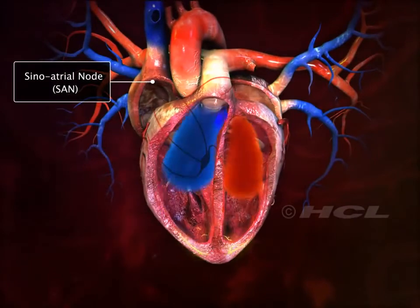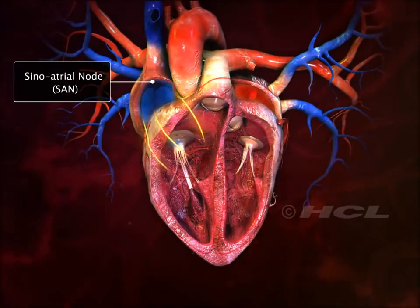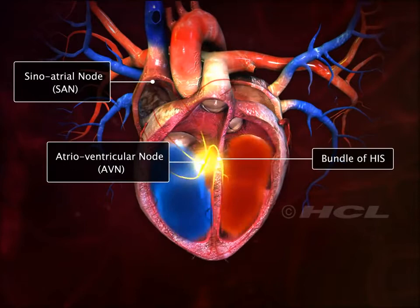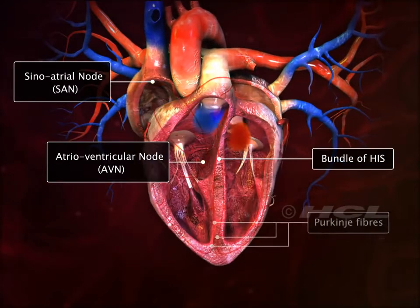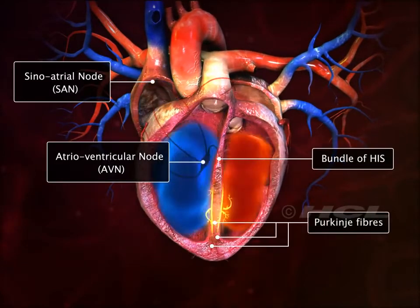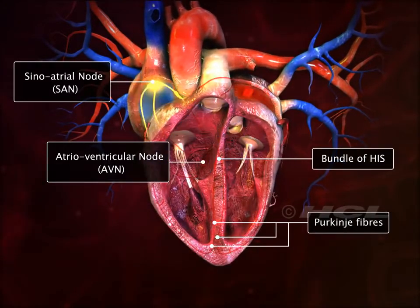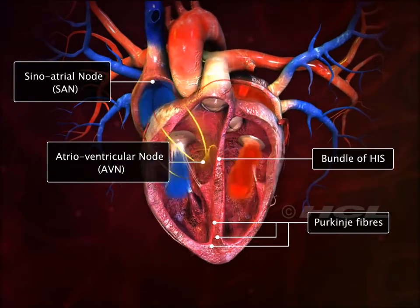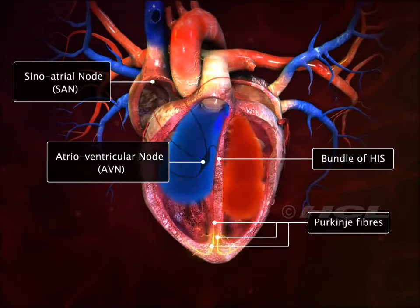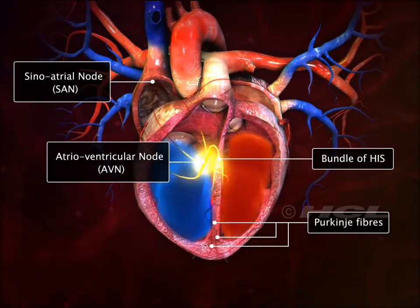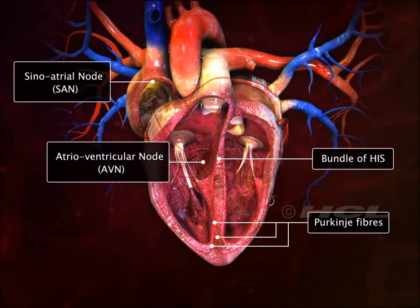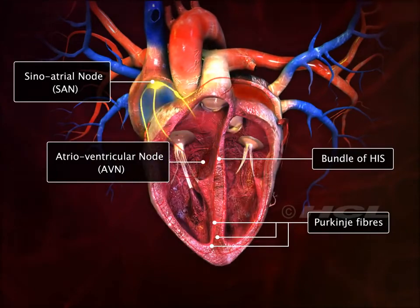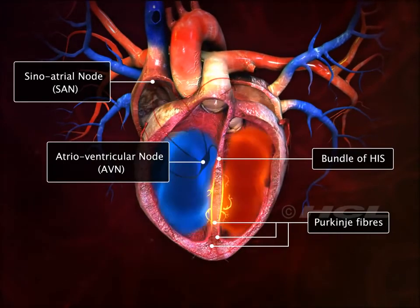The sinoatrial node, atrioventricular node, bundle of His, and Purkinje fibers represent the specialized cardiac tissue. These fibers are auto-excitable, as they have the potential to generate electrical activity without any external stimuli. This makes the heart beat continuously.